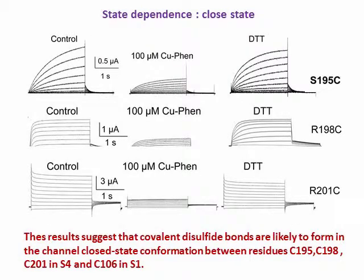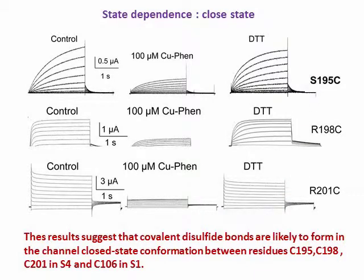We then exposed the cells to copper phenanthroline at hyperpolarizing voltages and measured the current amplitude following channel opening. We observed a dramatic reduction in current amplitude of all three mutants, which could be reversed by external perfusion with 1 mM DTT. Collectively, these results suggest that covalent disulfide bonds are likely to form in the voltage sensor downstate conformation between the cysteine S4 mutants and cysteine-106 in S1.